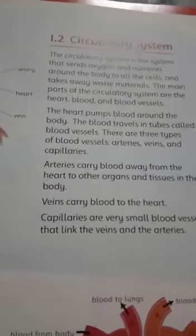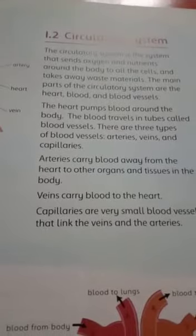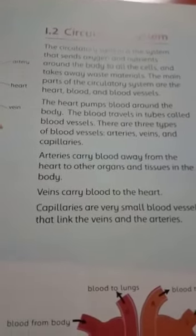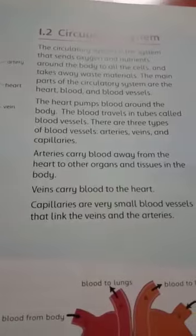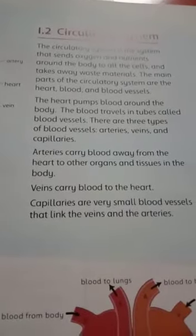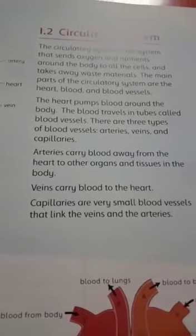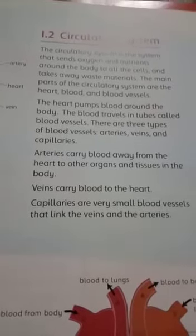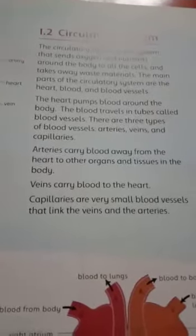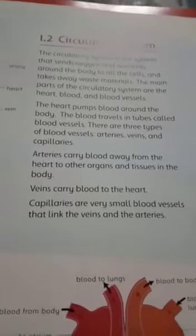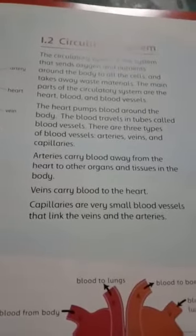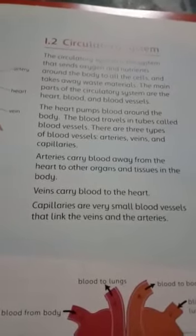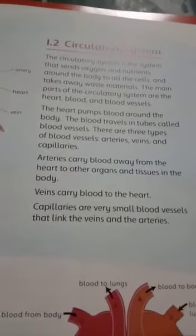Arteries are thick-walled vessels and they carry pure blood from the heart to each and every part of the body. Then come veins — veins are thin-walled and they collect waste as well as carbon dioxide from different parts of your body and bring it back to the heart, from where it is transported to the lungs to be purified.